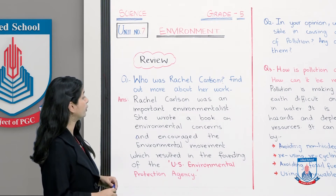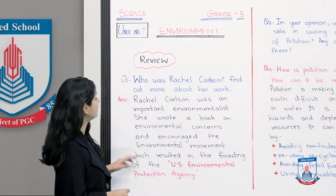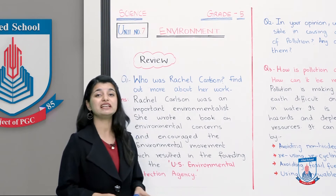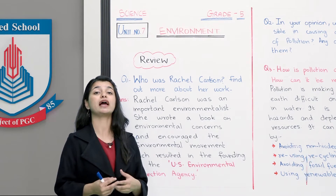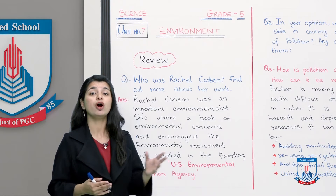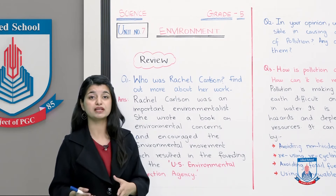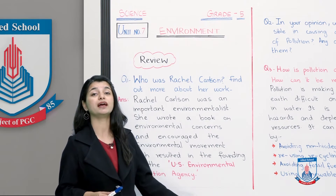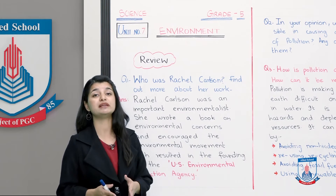Rachel Carson was an important environmentalist — those people who study the environment. She wrote a book on environmental concerns and encouraged the environmental movement, which resulted in the founding of the U.S. Environmental Protection Agency. So basically she was an environmentalist who wrote an entire book about why we should observe concerns about the environment and look out for them. She pointed out some problems, then she pointed out some solutions, and after that she initiated a movement called the Environmental Movement in the U.S. Eventually the U.S. Environmental Protection Agency was formed to protect the environment. She was the person who led to the formation of this agency, and that's why everybody knows her name.